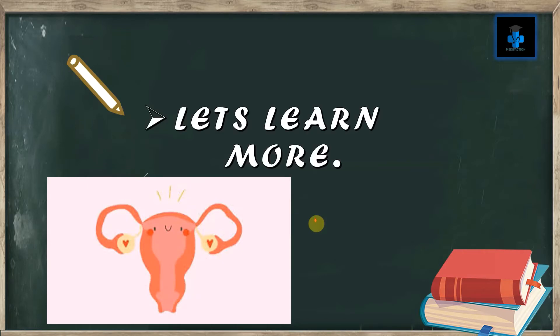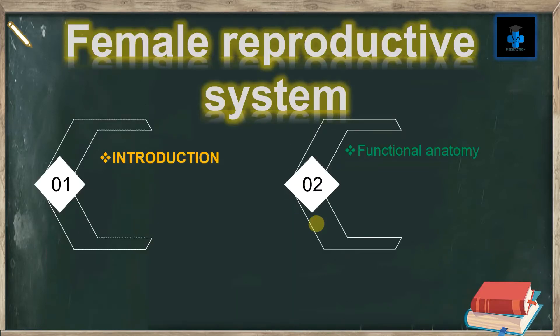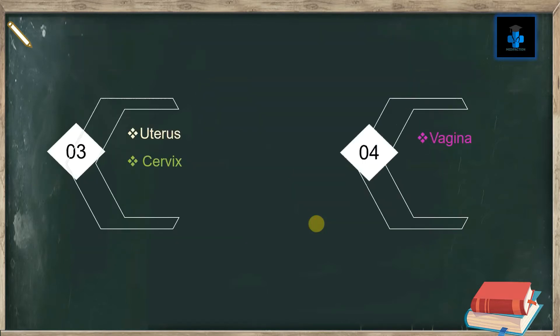In this video I will be enumerating an introduction. We will be learning about the functional anatomy of the female reproductive system, which includes the uterus, cervix, vagina, and a lot more.